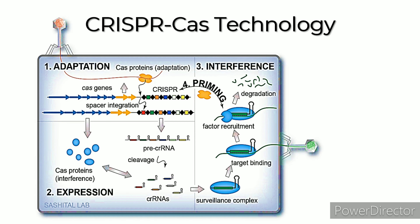An image shows CRISPR-Cas technology with its steps: adaptation, expression, interference, and priming. Applications of CRISPR-Cas technology include genome editing, CRISPR libraries for screening, CRISPR-Cas9-mediated chromatin immunoprecipitation, transcriptional activation and repression, epigenetic editing with CRISPR-Cas9, live imaging of DNA or mRNA, and therapeutic applications.